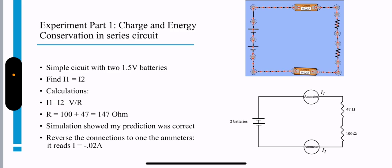Experiment part one: Charge and energy conservation in circuits. Simple circuit with two 1.5 volt batteries. You start by finding i1 and i2. Our calculations is that i1 equals i2, so that means delta V over R equals i2 and i1.